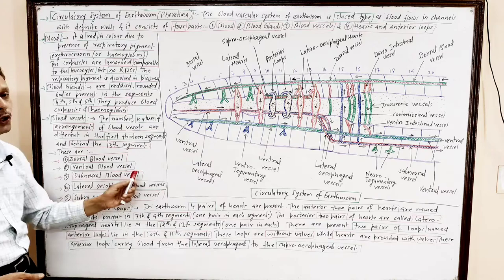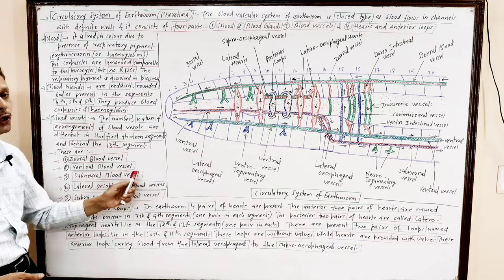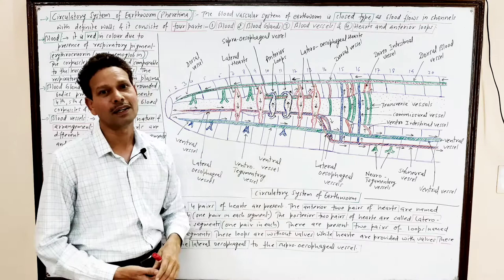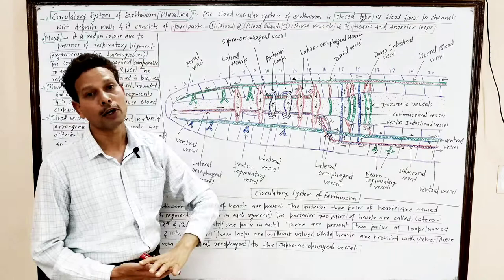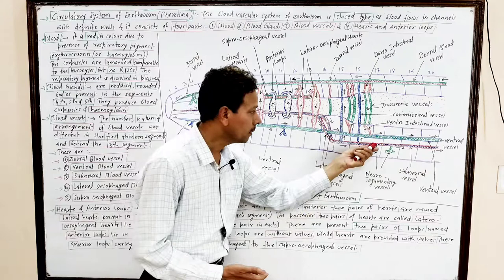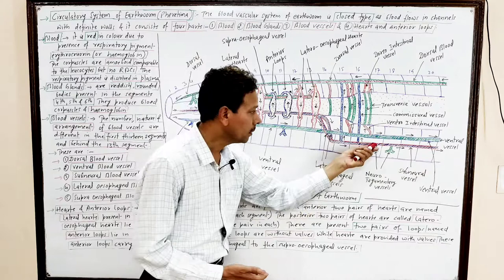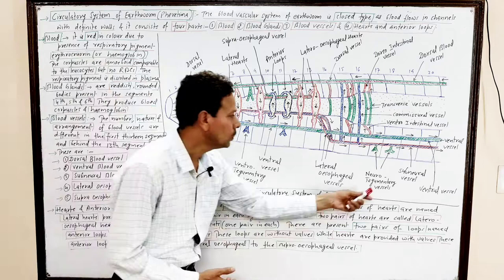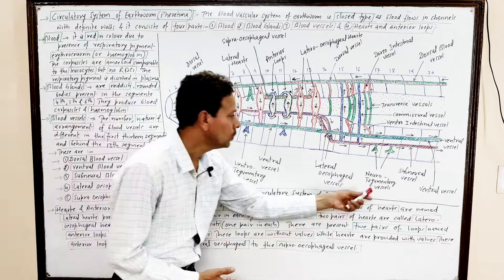The next blood vessel is the subneural blood vessel. As it lies below the nerve cord, it is called the subneural blood vessel. It runs from the 14th segment up to the last terminal part of the body. This subneural blood vessel collects blood — it receives blood from the body wall and nephridia through neurotegumentary vessels.